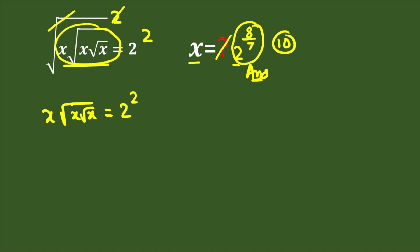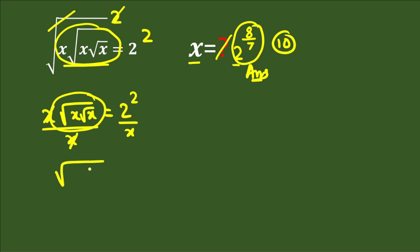In the next step, to remove the square root, we divide both sides by x. The x in the numerator on the left-hand side cancels, and we are left with square root x times square root x, equal to 2 squared divided by x.